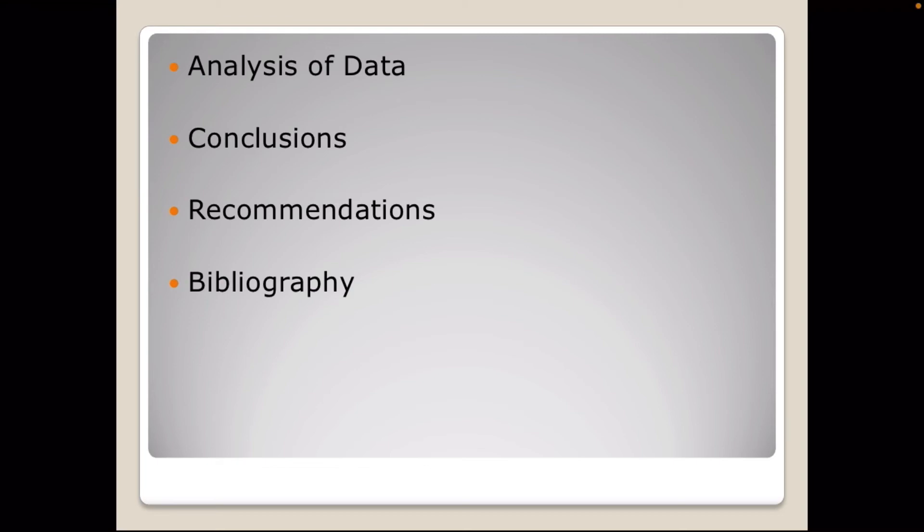Next is recommendations. Consist of suggestions on future actions such as new direction of research or further experiments to be performed, practices that might be adopted or discarded in order to attain certain goals or objectives. And lastly, we have bibliography. This is a list of references that used in guiding the research work in writing paper. You need to cite your references where your data has came from.